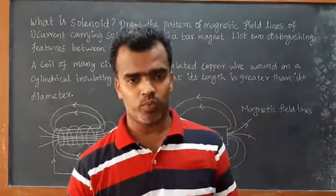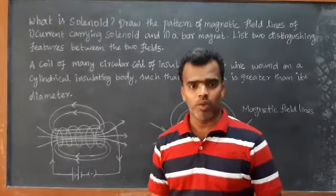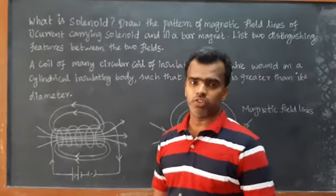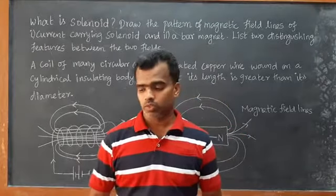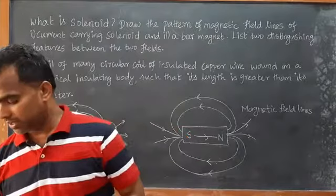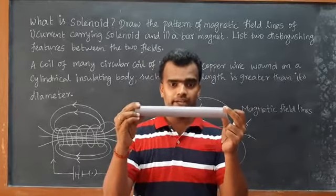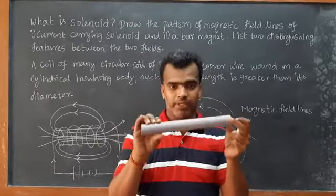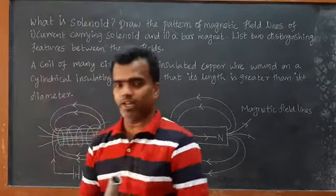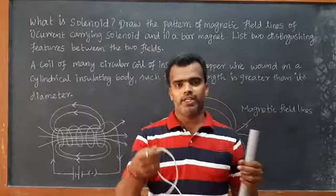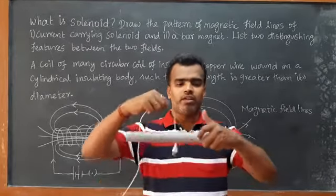So what is a solenoid? A solenoid is a number of coils wound using insulated wire, mounted on a cylindrical insulating body — like a PVC pipe made of insulating material. We take insulated wire and make a number of turns: first turn, second turn, third turn, fourth turn, fifth turn, and so on.